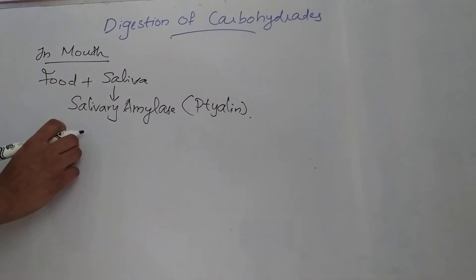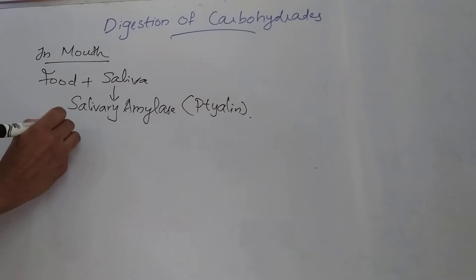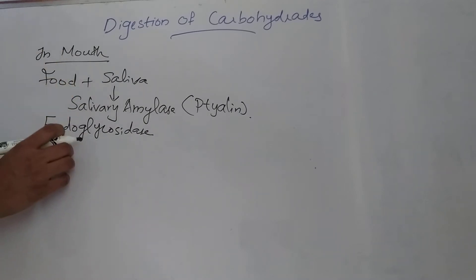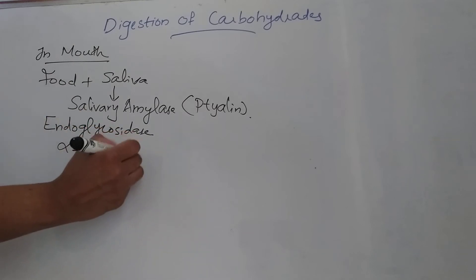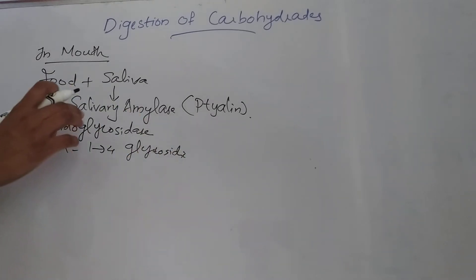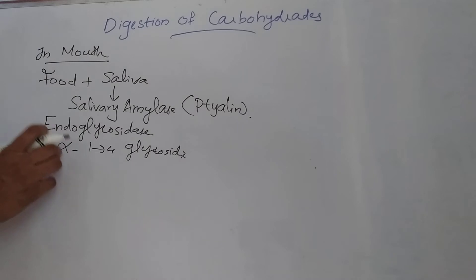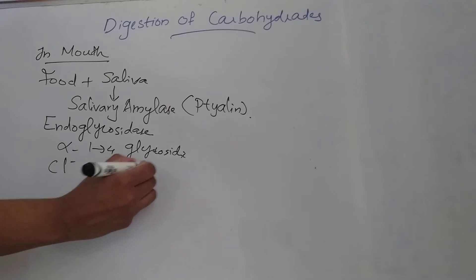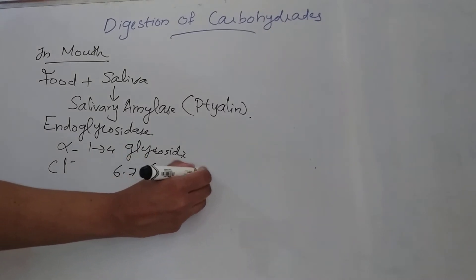Salivary alpha-amylase is an endoglycosidase, which means it can cleave internal alpha-1,4 glycosidic linkages. This enzyme requires chloride ions for its activation, and its optimum pH is around 6.7, that is between 6.6 to 6.8.